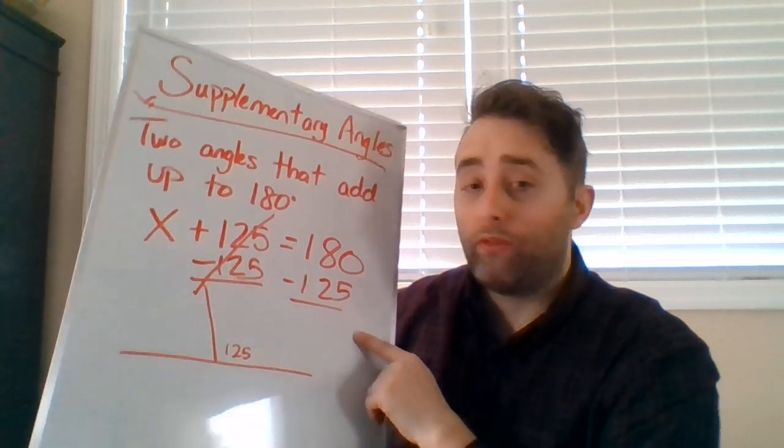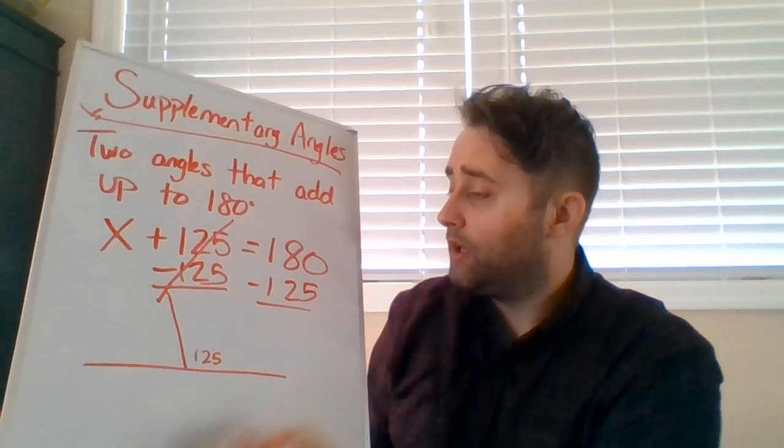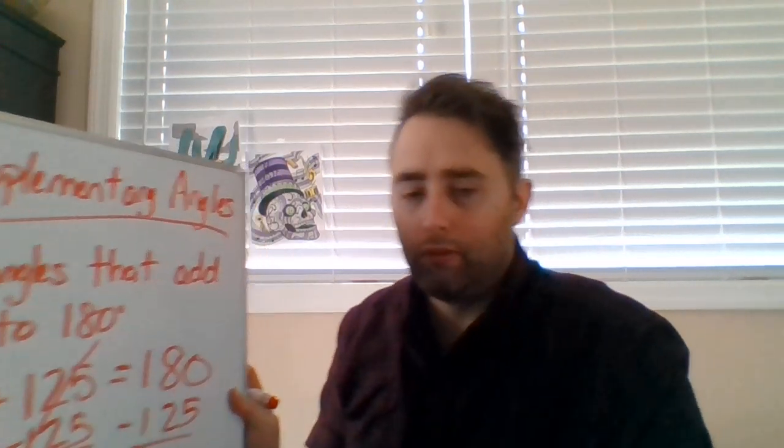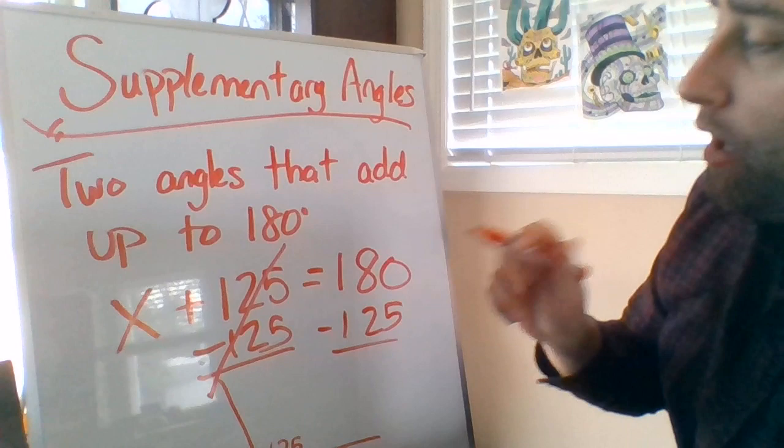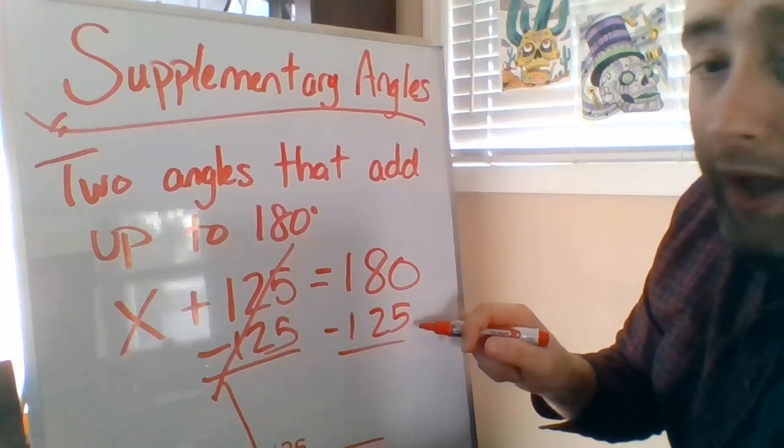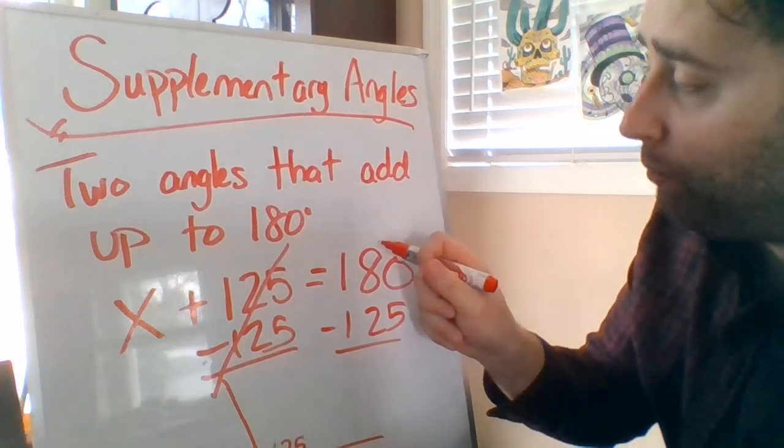They are opposites. Now over here, I have 180 minus 125. Let's do some work. Turn it so you can see. There we go. So I can't take zero from five. If you have nothing, you can't give away five. So I have to borrow.